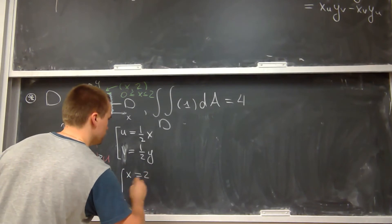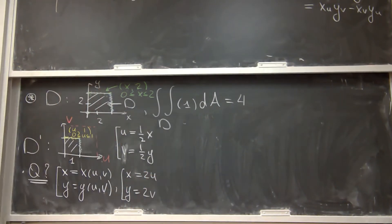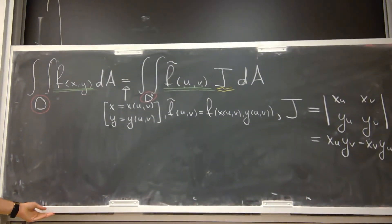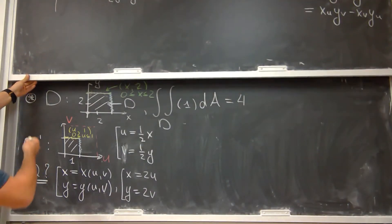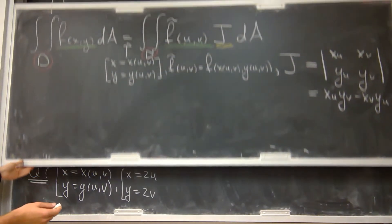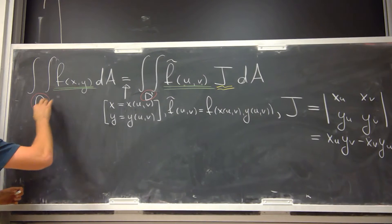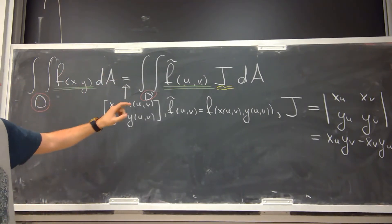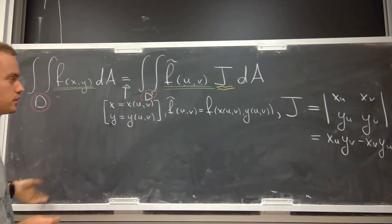So the change of variables formulas are x = 2u and y = 2v. The usual idea of change of variables is that if we have a really complicated function f or a really complicated region D, we can simplify either the region or the function in order to compute the original integral.